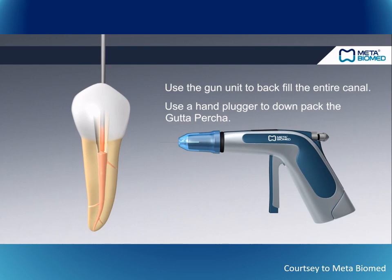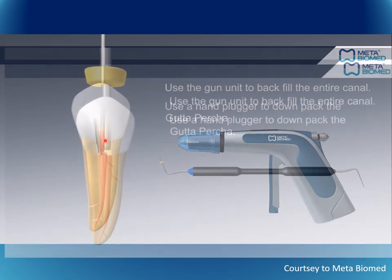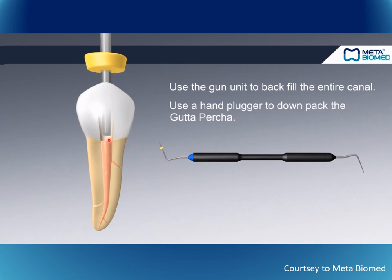Using the gun unit of the root canal obturation system, we introduce molten gutta-percha to obturate the remaining part of the root canal — mainly the middle and cervical portions. A hand plugger is then used to adapt the molten gutta-percha as it begins to solidify.